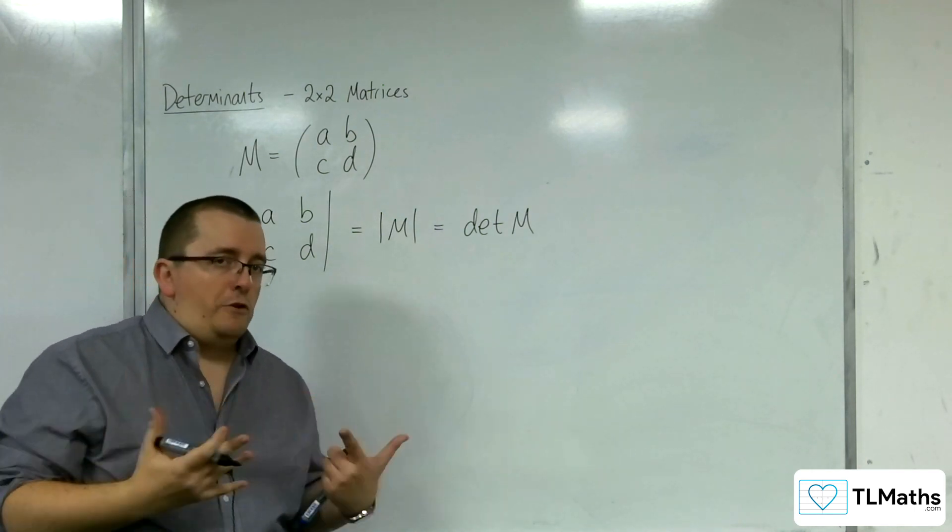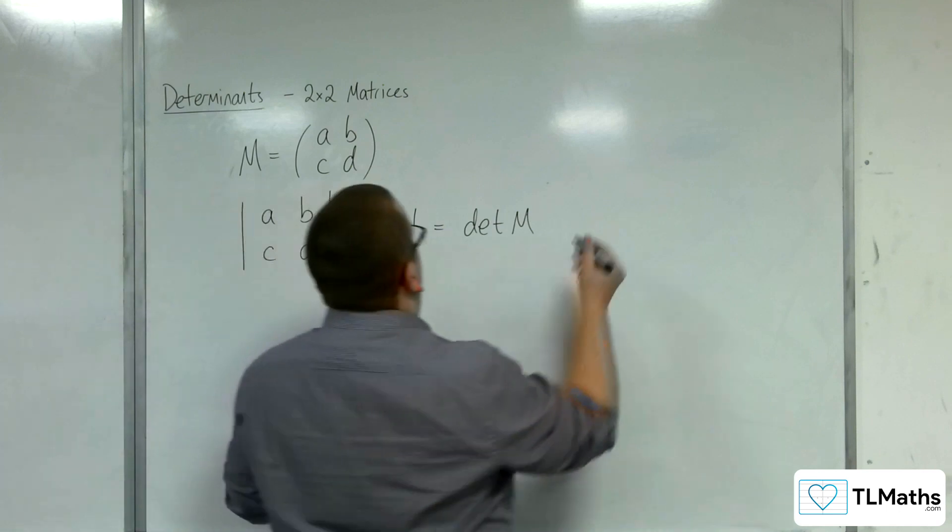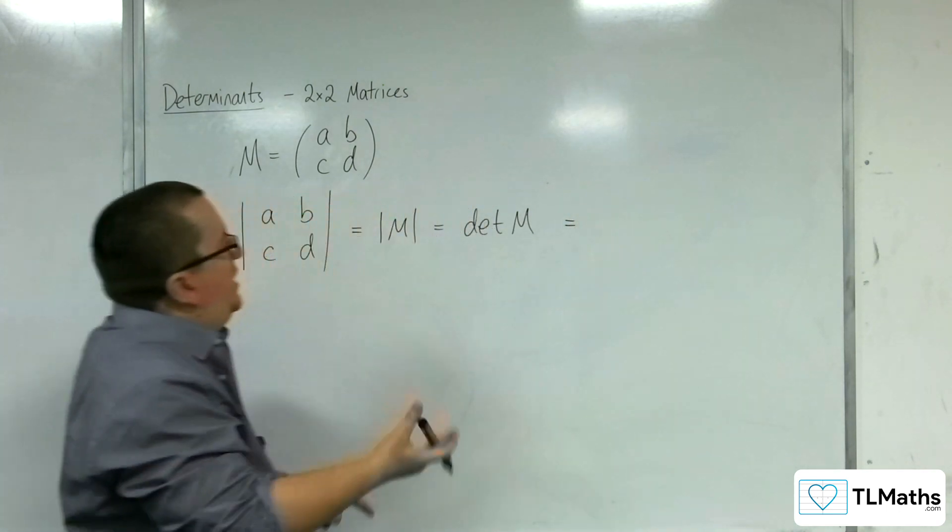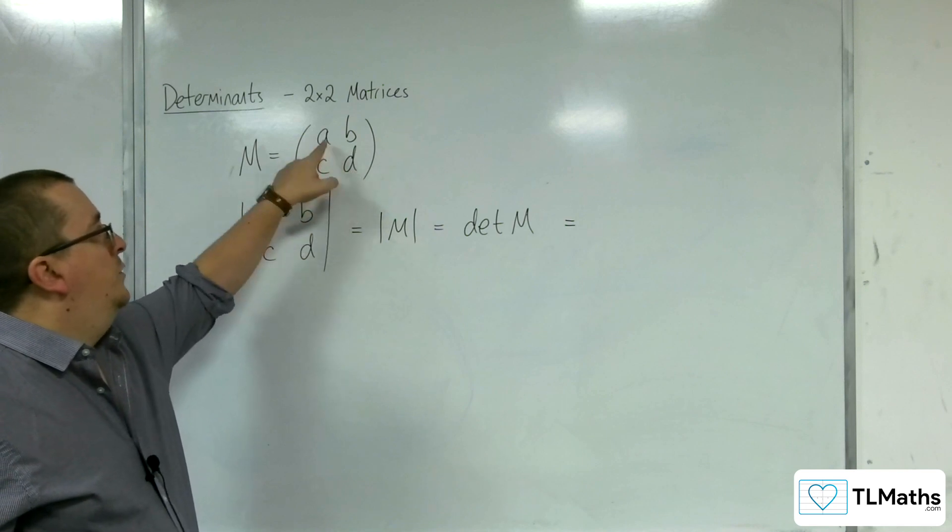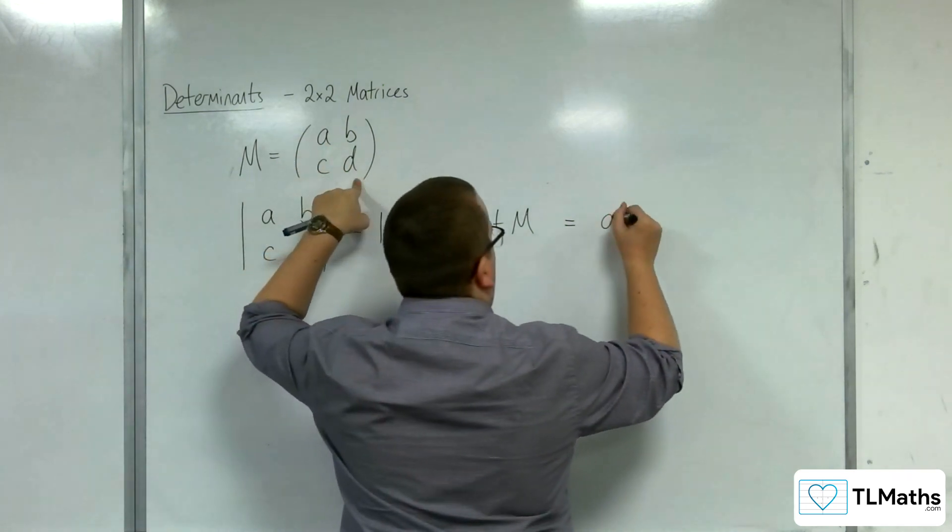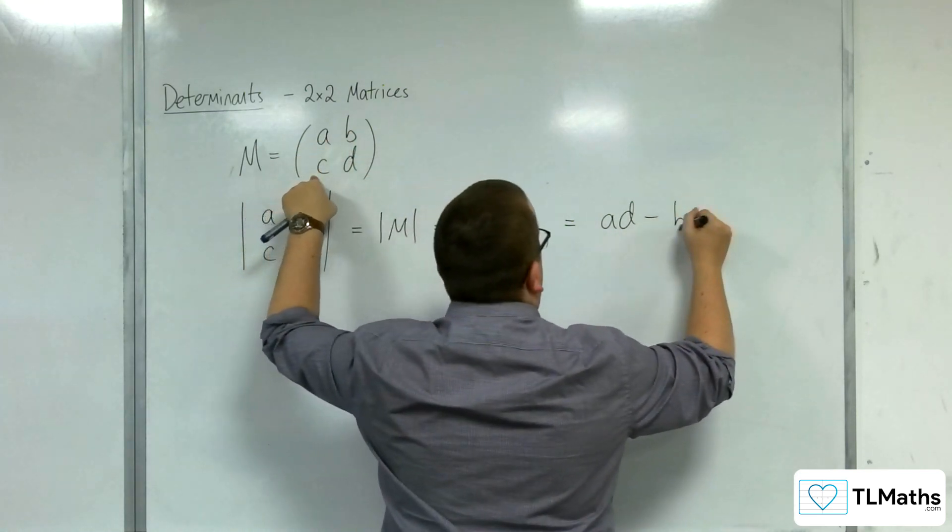There are a few different variations of notation here to mean the same thing. But what is clear is that the determinant is multiplying that diagonal, a by d, and then subtracting the other diagonal multiplied, b times c.